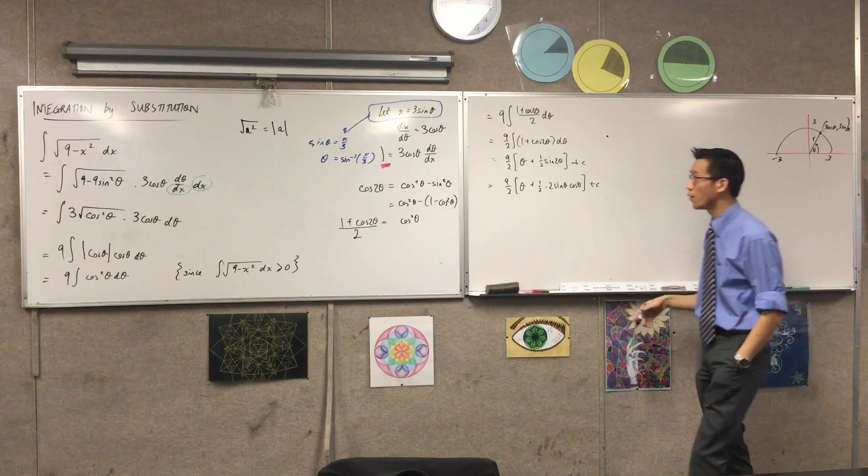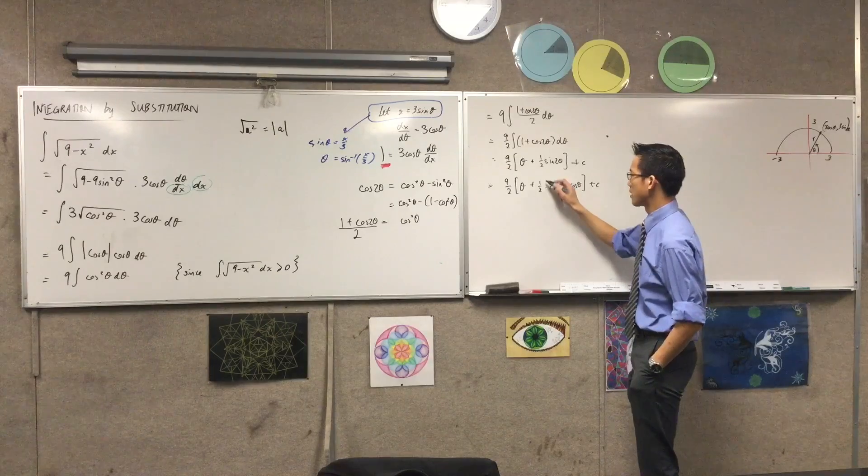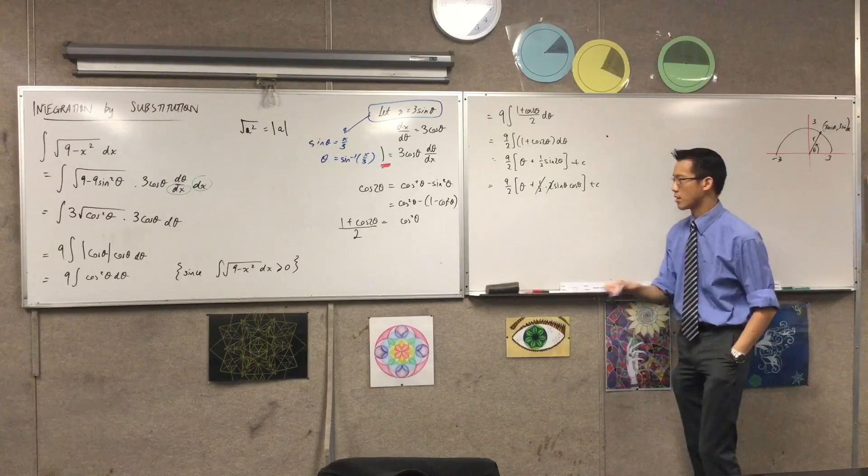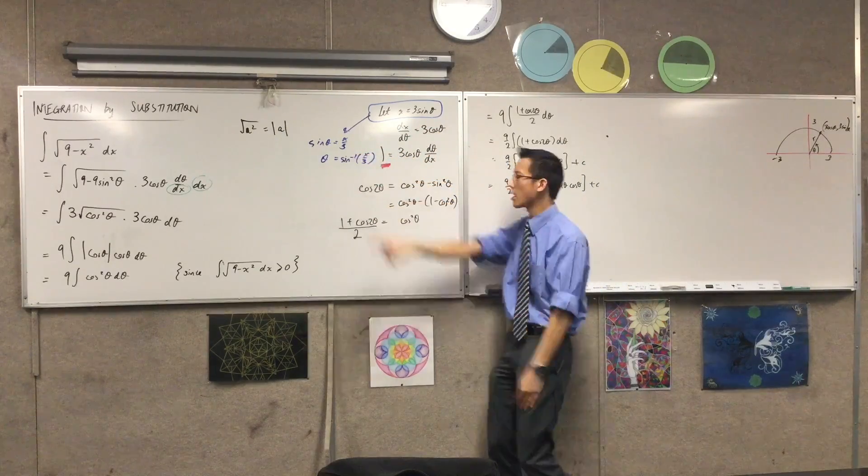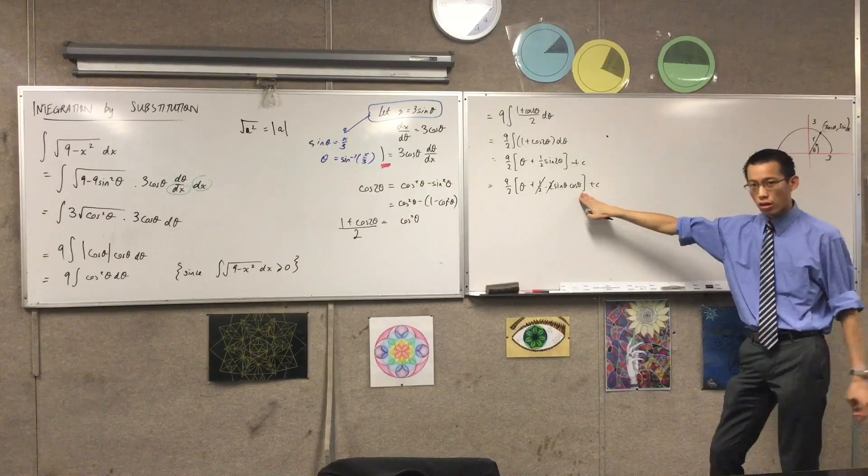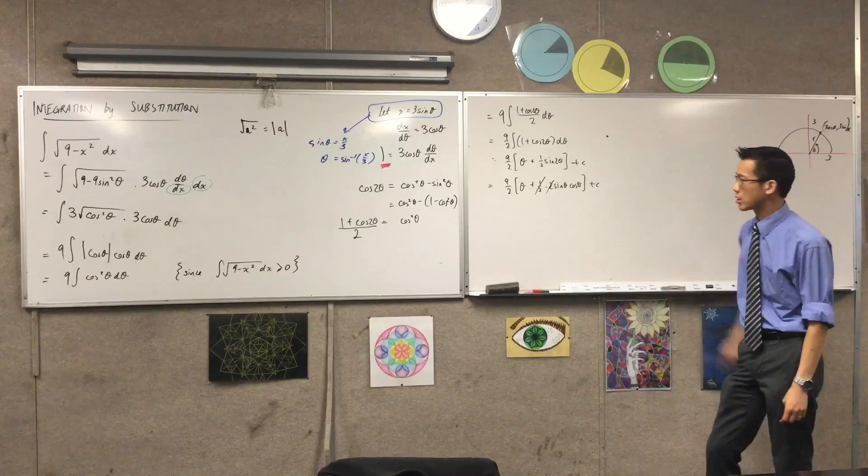This is already better than what I had before, because, well, I mean, I can cancel these constants, but look, sine theta, I know what sine theta is, it's x on 3, I can take care of that. But what's cos theta? How am I going to deal with cos theta?